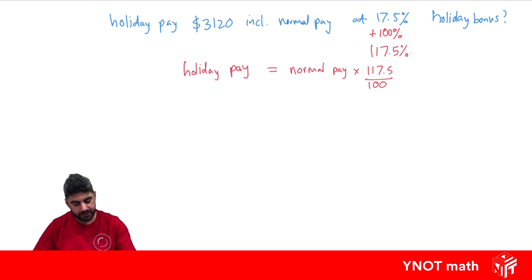Our holiday pay is $3,120, which equals our normal pay times 1.175. We divide both sides by 1.175, so our normal pay equals 3,120 divided by 1.175. Put that in the calculator and we get $2,655.32.